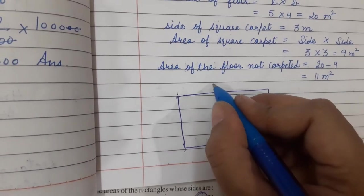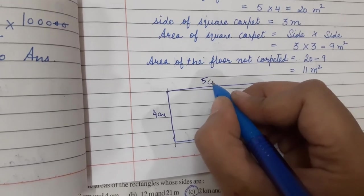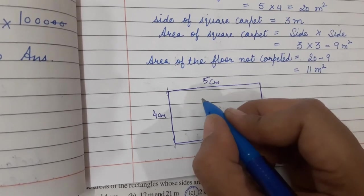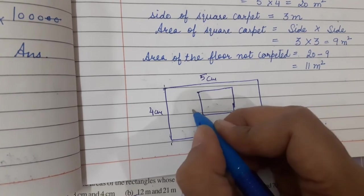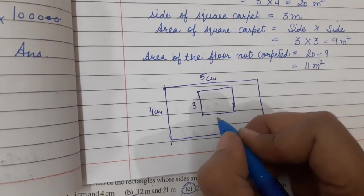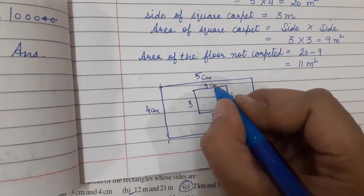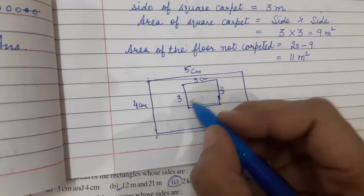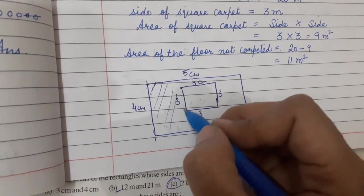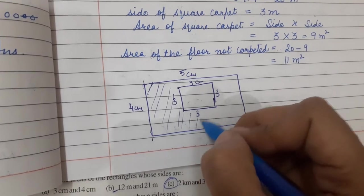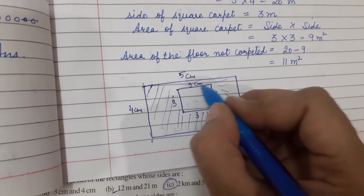This is the floor — let's say this is 5m and this is 4m. Here you have to put a square carpet on the floor, which has sides 3m, 3m, 3m, and 3m. Because it is a square, all sides are equal. You have to find the area of the region where there is no carpet.